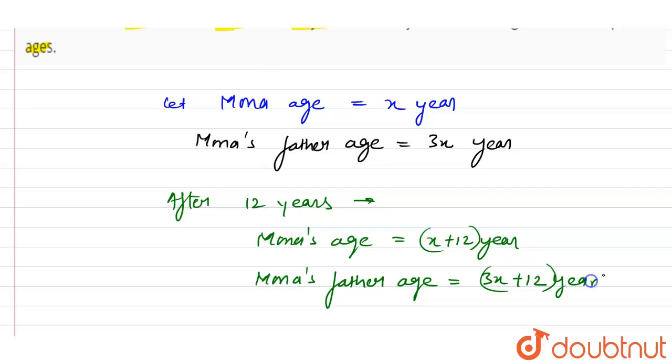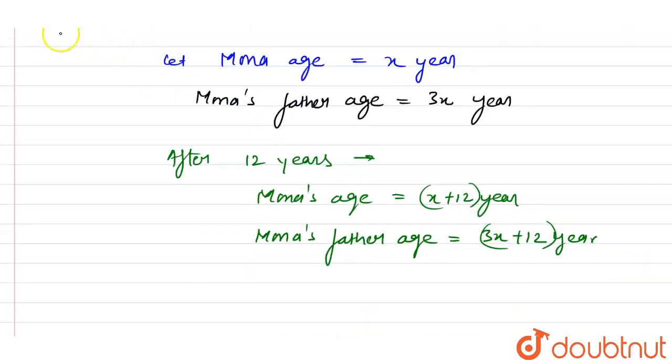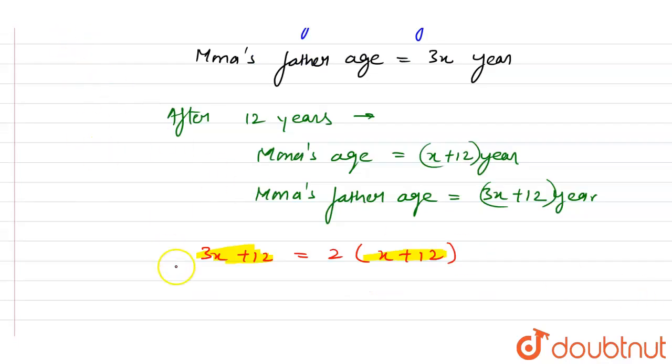Okay. This is the age after 12 years. Now after 12 years the Mona's father age will be twice his daughter. So Mona's father age, which is 3x plus 12, is twice of his daughter. This is the Mona's father age and this is the Mona's age. Now this equation can also be written as: